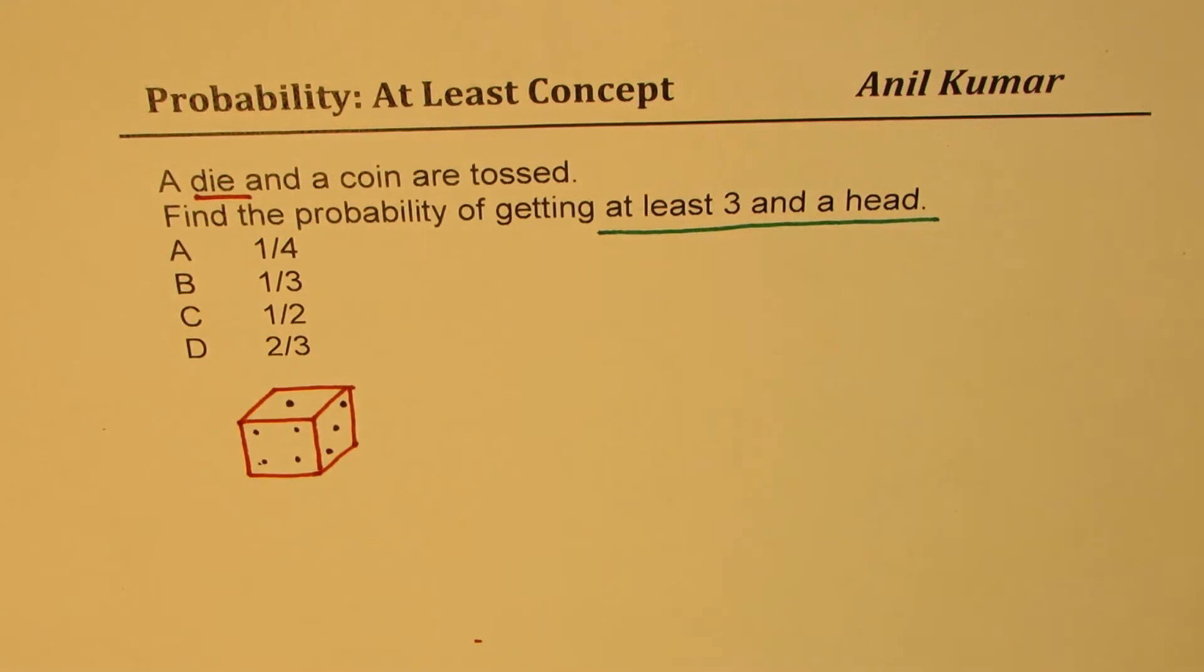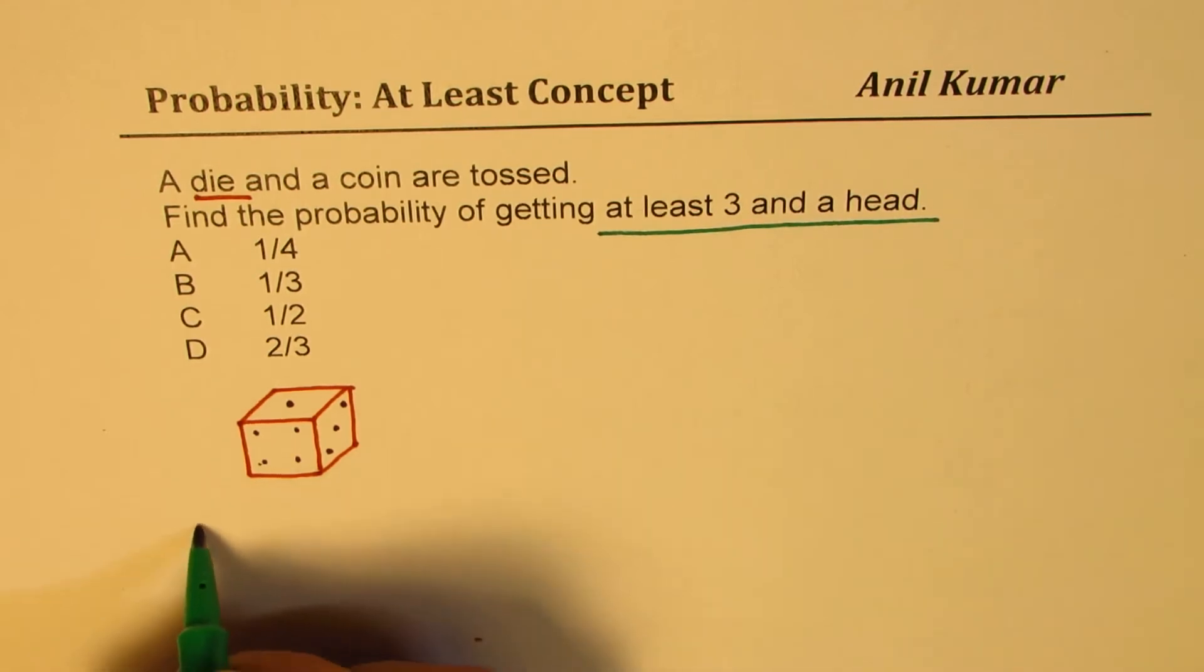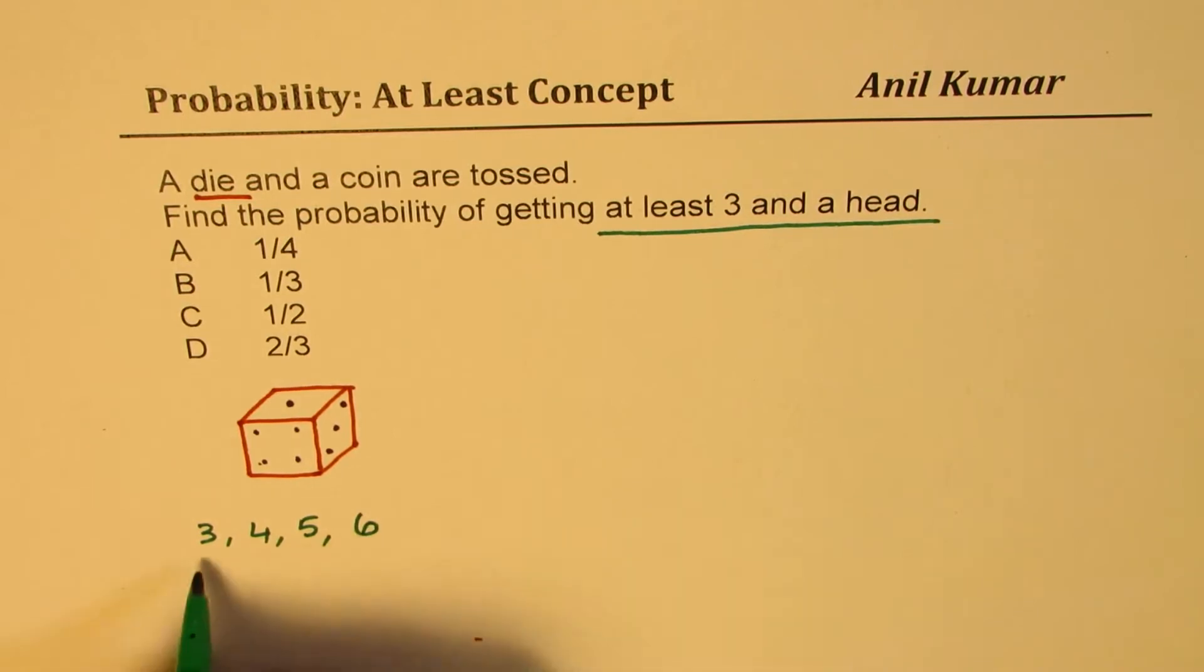Now what do we mean by at least three? That really means we are looking for numbers which are three, four, five, and six. That is at least three. This is what we mean when we say at least three. Now I think it becomes absolutely clear and you can easily find the solution.